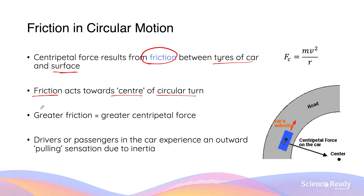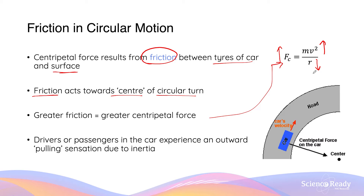The greater the friction force between the surface and tyres, the greater the centripetal force. Using the equation for centripetal force, if the mass of the car stays constant, an increase in centripetal force could mean two things: an increase in velocity, so the vehicle can go around the circular bend at a faster speed, or a smaller radius, meaning the car can go around the bend with a smaller radius. We'll look at the implications in more detail in practice questions.